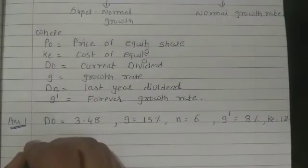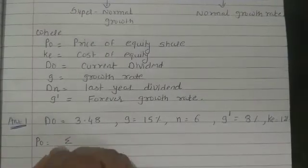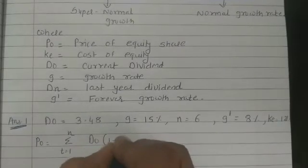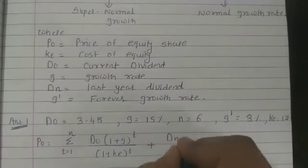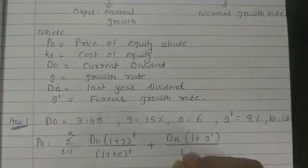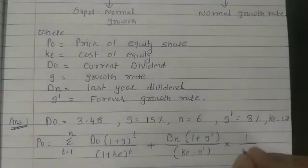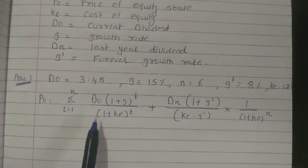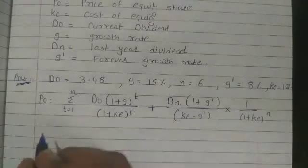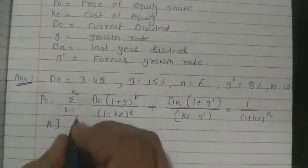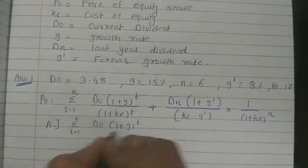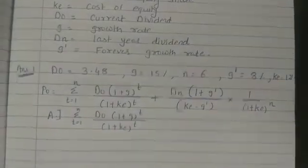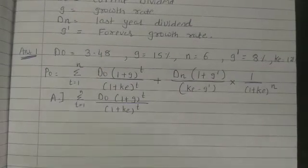First recall the formula: P0 = summation T=1 to N of D0(1+G)^T upon (1+K)^T, plus Dn(1+G') upon (KE minus G'), into 1 upon (1+K)^N. We will solve this in two parts: Part A plus Part B. Part A is the summation portion: summation T=1 to N of D0(1+G)^T upon (1+K)^T. For this purpose, make a table.